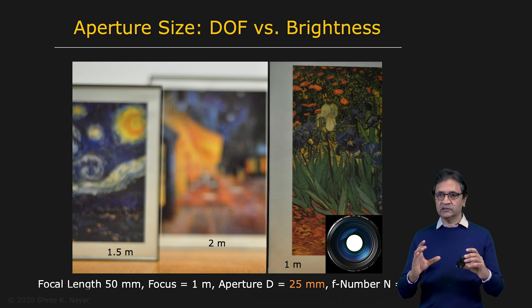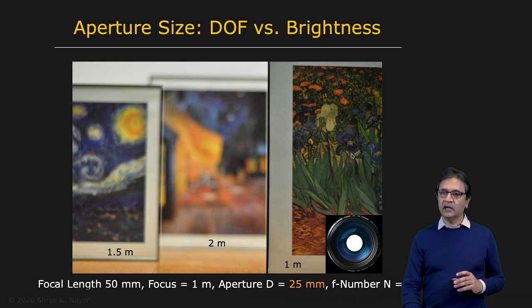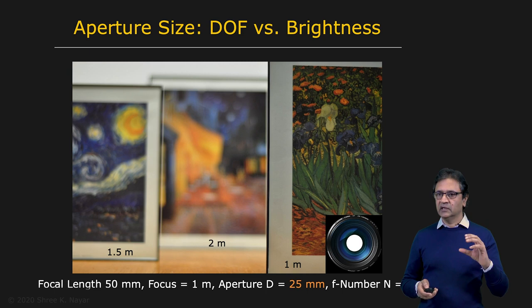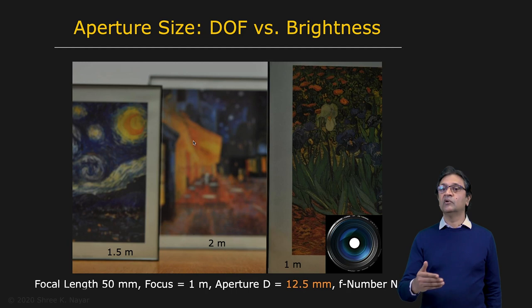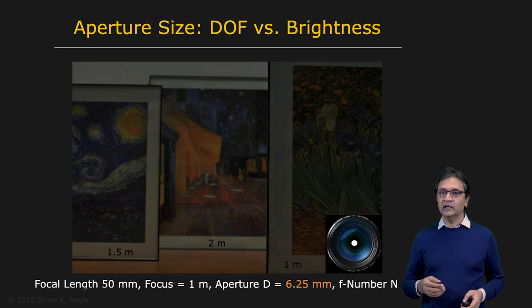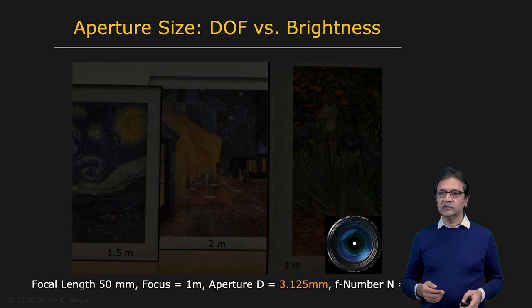The painting at one meter is perfectly focused and bright, but the one at one-and-a-half meters is out of focus and the one at two meters is even more out of focus. Now let's stop down the aperture — increase the F-number or reduce the aperture diameter. When you do that, the paintings that were out of focus get more in focus, but the image gets darker because less light is collected. At an F-number of eight, you get a much darker but sharper image. Going further to an F-number of 16, you're almost approaching a pinhole — the image is focused nearly everywhere but really dark.